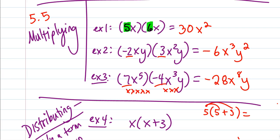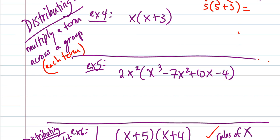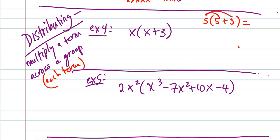That's a quick review of our rules for multiplying. Now we're going to kick it up a notch. What if I have x times (x + 3)? We're going to do what's called distributing — that's where we multiply a term across a group, or multiply a group across a group. We're going to take this x and multiply it across the x and the 3.